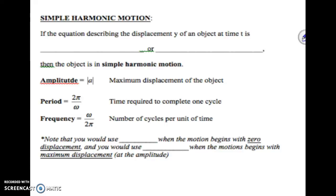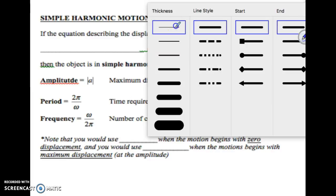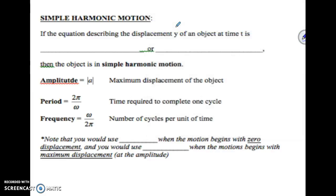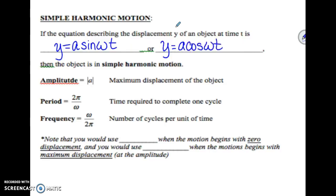This is pre-calculus section 5.5: modeling harmonic motion — our last section of notes for chapter 5. Today we're going to do some applications of sine and cosine. Harmonic motion can be modeled by either of those functions, and which one we choose depends on the circumstances. If the equation describing the displacement y of an object at time t is y equals a sine of omega t, or y equals a times cosine of omega t, then the object is in simple harmonic motion.